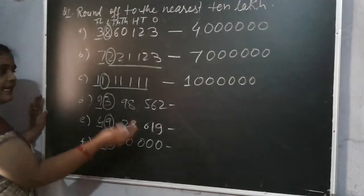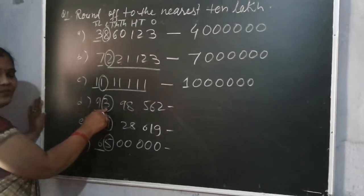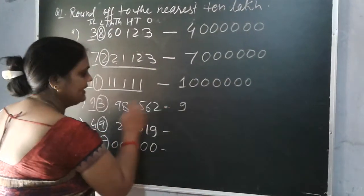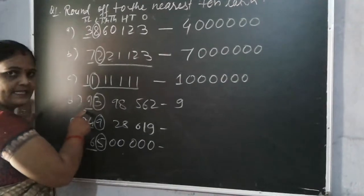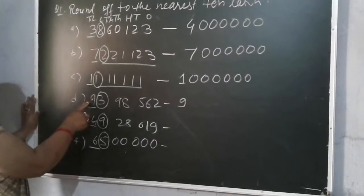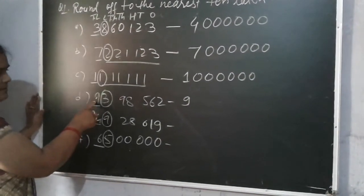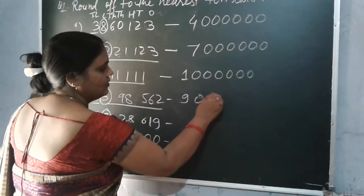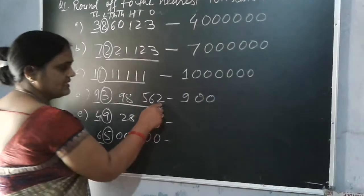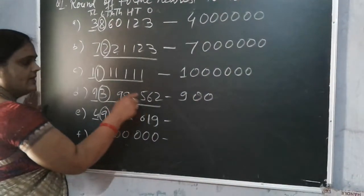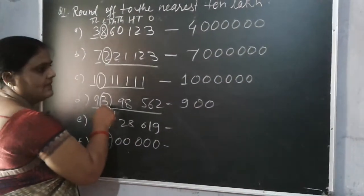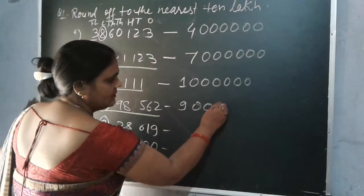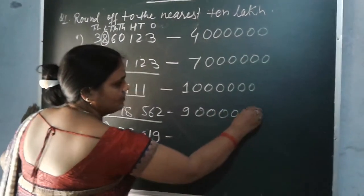Now, the digit 3 is again less than 5. Same — write down 9 as it is. No changes on the 10 lakh place. And on that place you have to put 6 zeros: 1, 10, 100, 1000, 10,000 and lakh — there are 6 digits, so put 6 zeros.